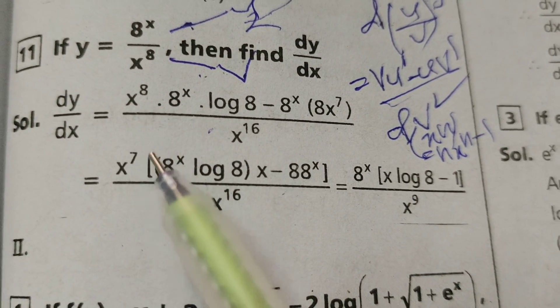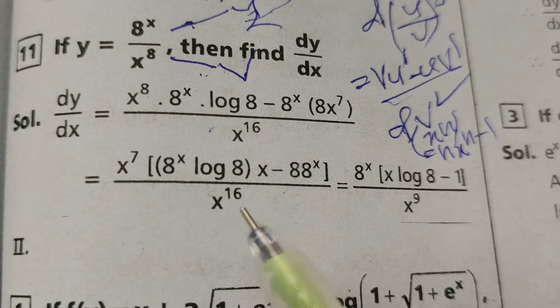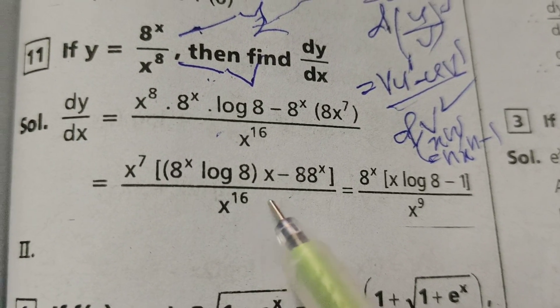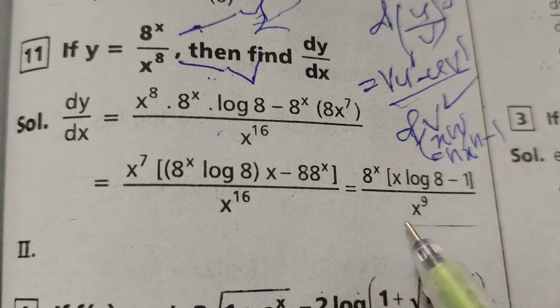Here x power 7, denominator x power 16 minus 7, it is x power 9.